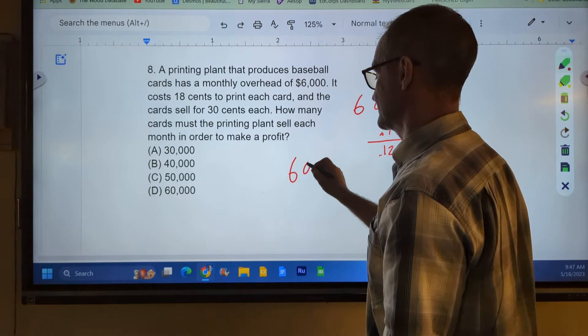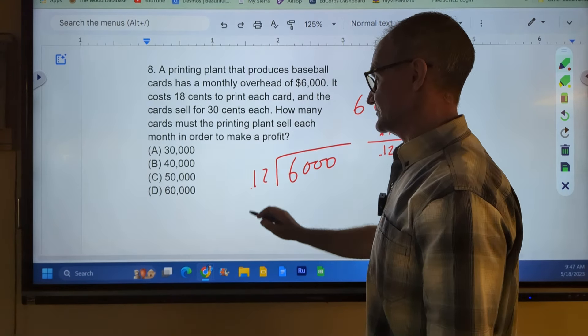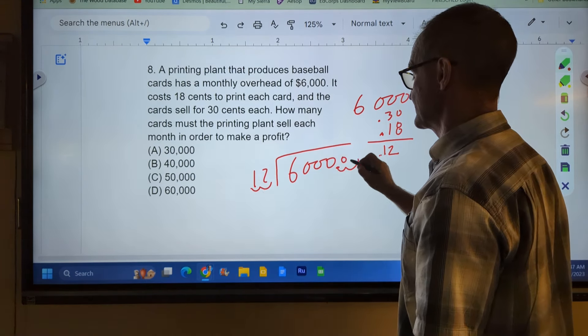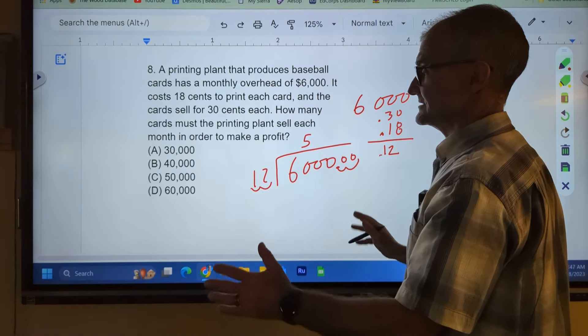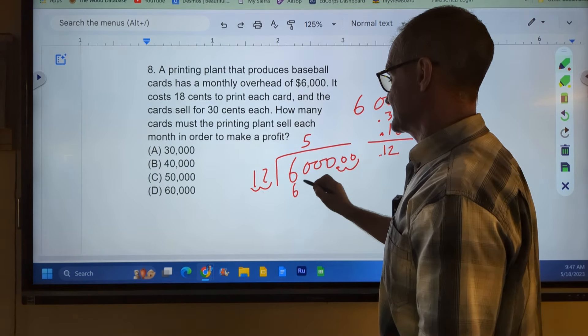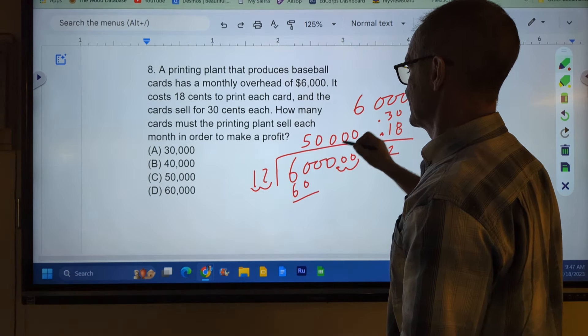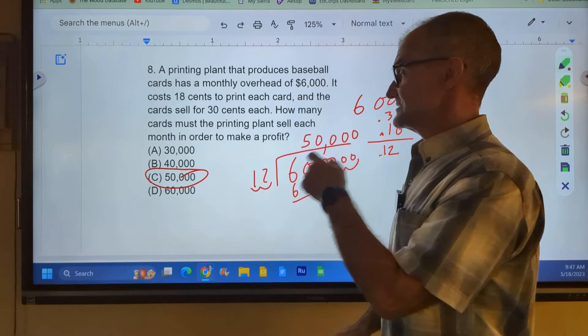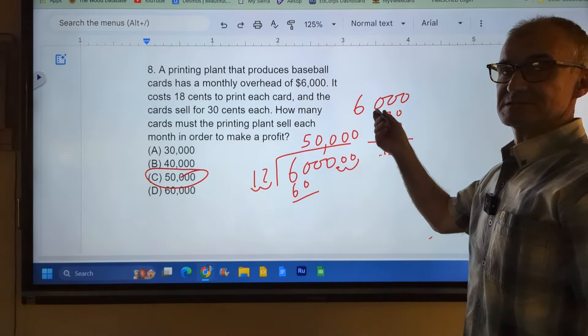So that $6,000 is divided by that 12 cents. This is a decimal here, so I've got to go over one, two, and that decimal's here, one, two, right? So I'm doing 12 into 60 is 5. I could actually stop right there and circle C, because I know it's got to start with a 5. That'll give me 60. Bring down the zeros, and I could see it's going to be 50,000, correct answer, answer C right there. So you've got to sell 50,000 cards at a 12 cent profit to pay off your $6,000.